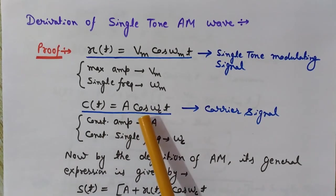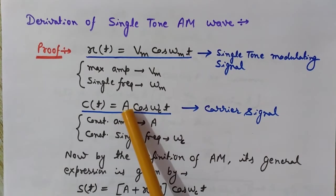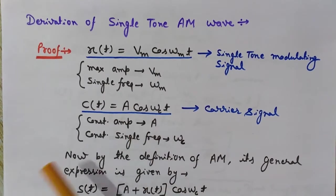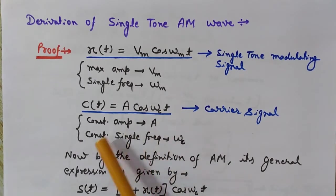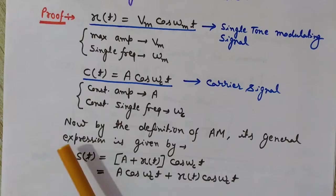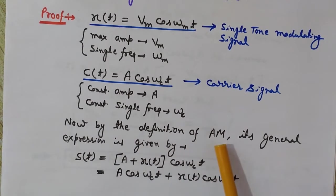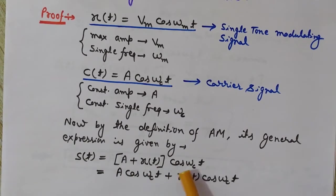The carrier wave in the time domain is c(t) = A·cos(ωc·t), where A is the constant amplitude of the carrier wave and ωc is its fixed frequency. By the definition of amplitude modulation, its general expression is s(t) = [A + x(t)]·cos(ωc·t).